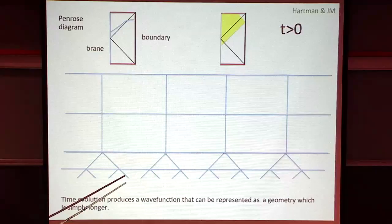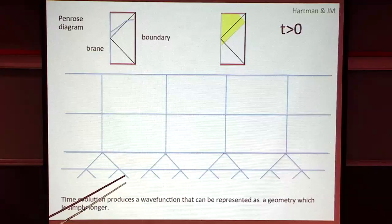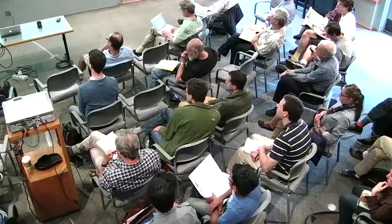This is time evolution - Schwarzschild time evolution. In the interior, it's a space evolution. In this network, it's also a space evolution, because we are generating a longer and longer network that we used to describe states.